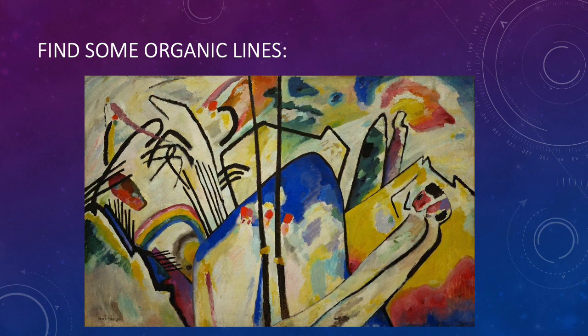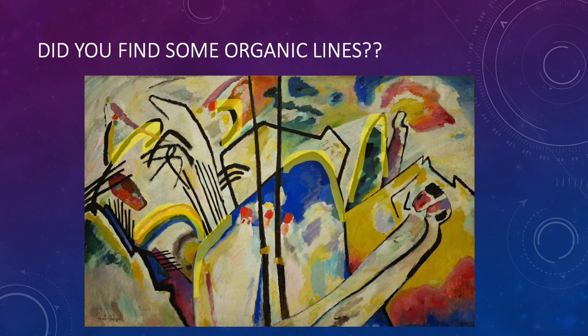Now find some organic lines. These are the lines that are curved or wavy — lines that could come from life instead of math class. Did you find the organic lines? I've highlighted them with yellow so you can see them. Even though in this painting there are no specifically wavy lines, there are lots of curved lines!